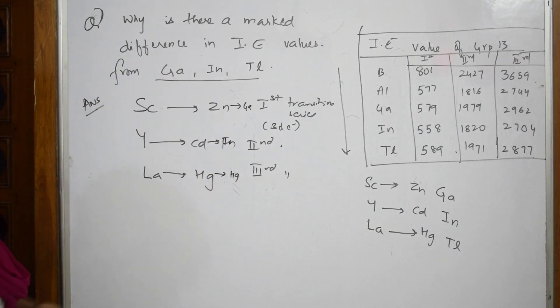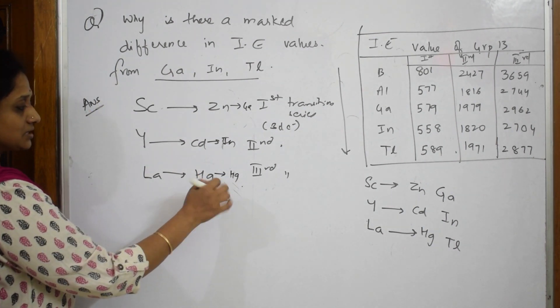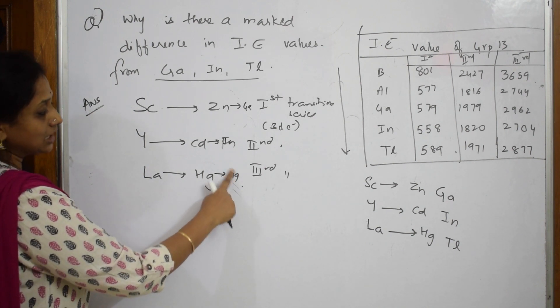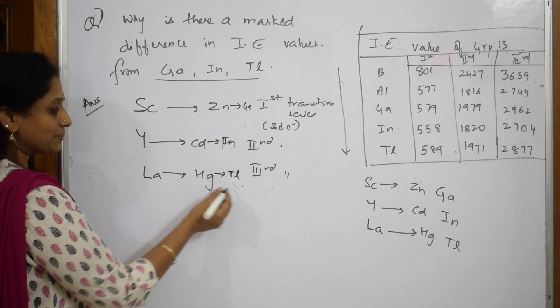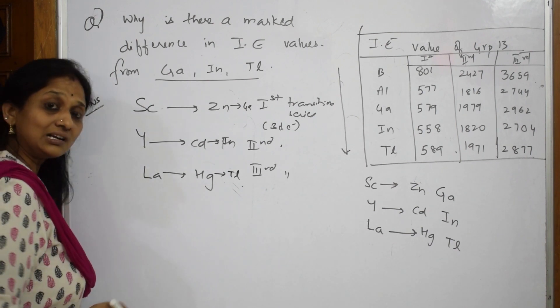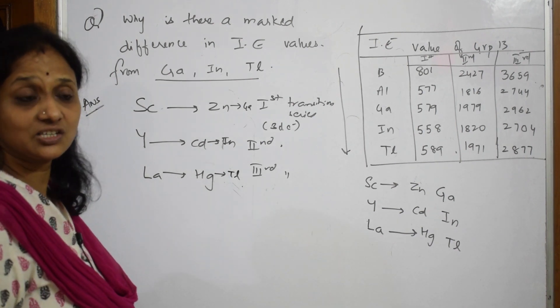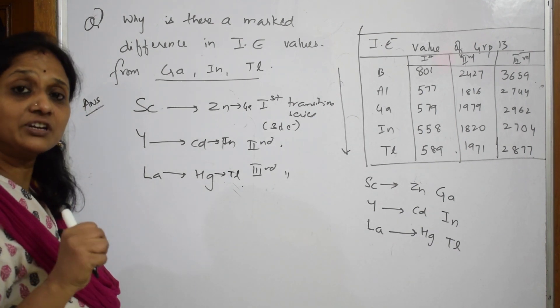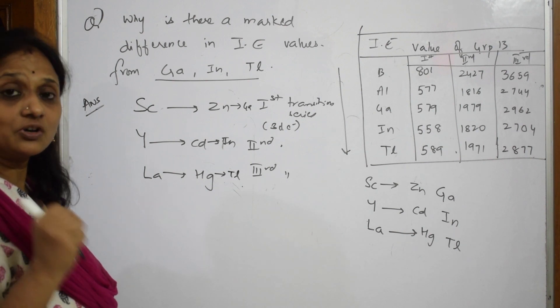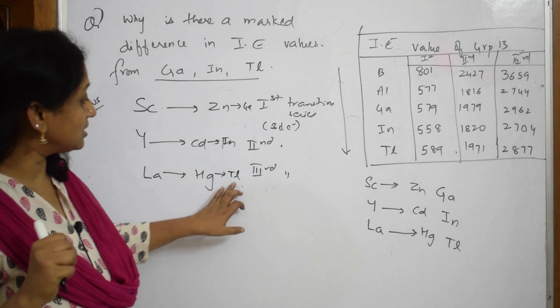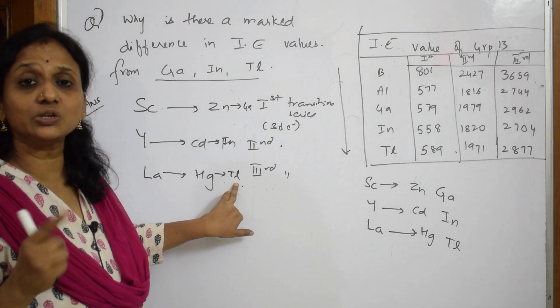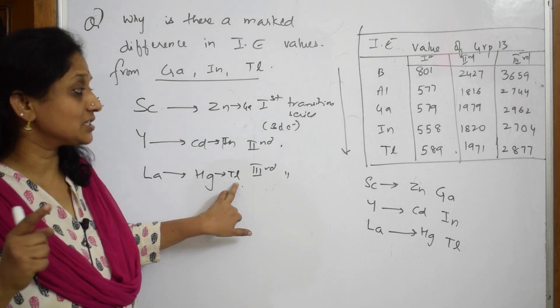Apart from that, when it is Mercury - this particular thing, Thallium (sorry, this is Thallium) - what happens here is there is a concept called lanthanide contraction which is acting. Lanthanide contraction is ineffective shielding of electrons. Because of this lanthanide contraction, that effect is observed in Thallium also.